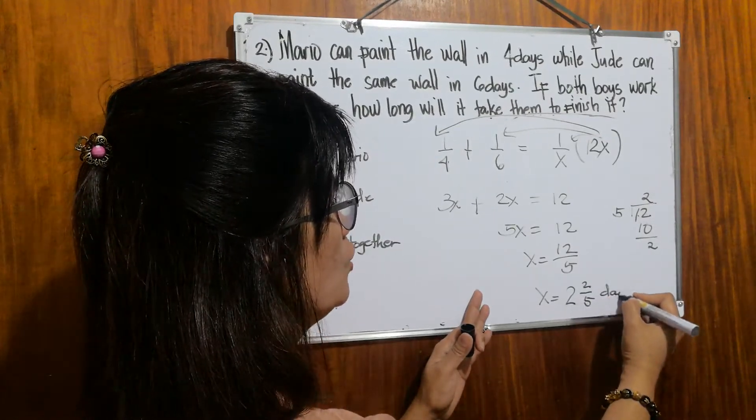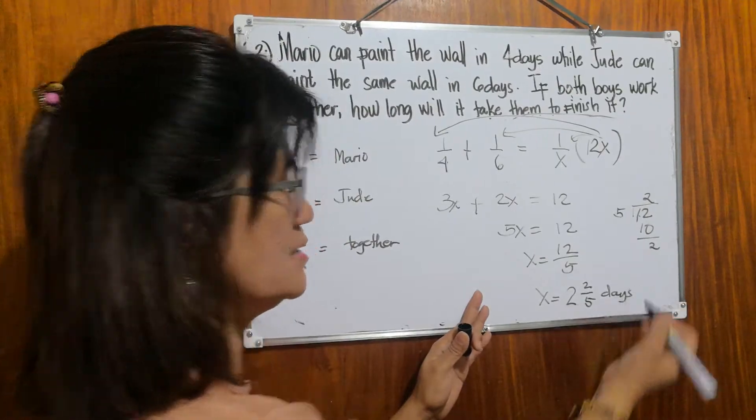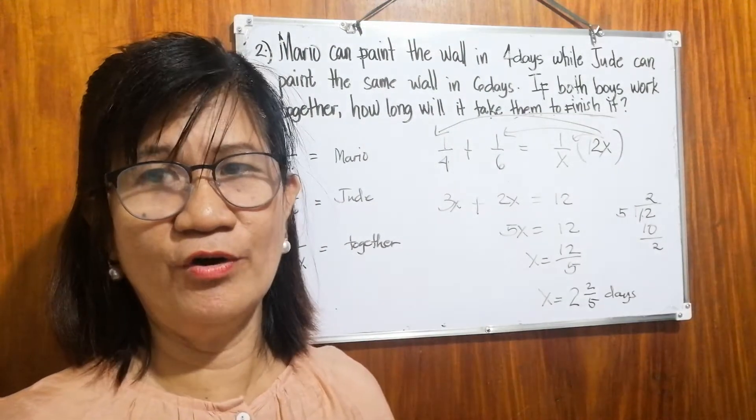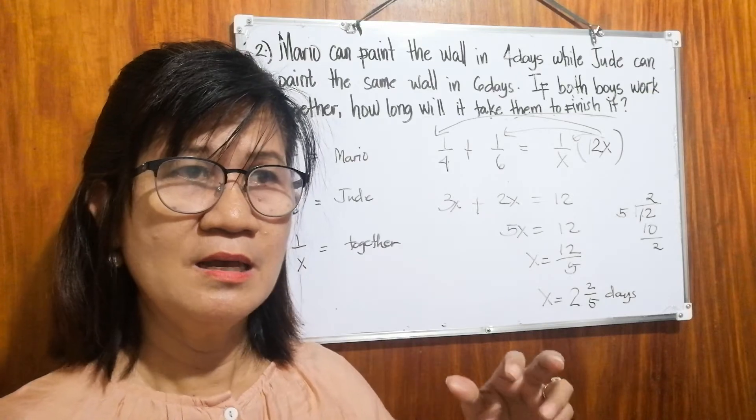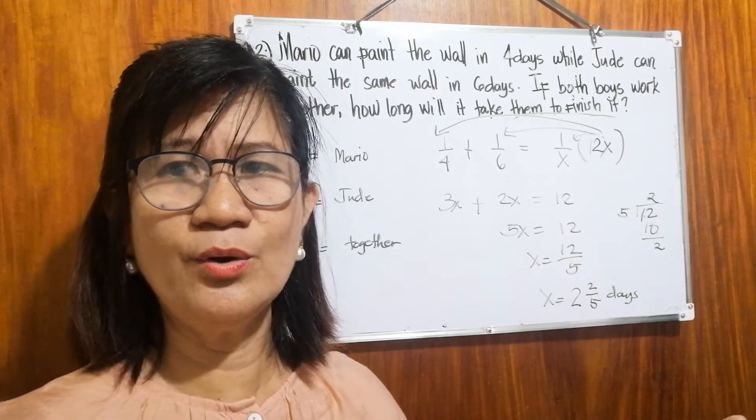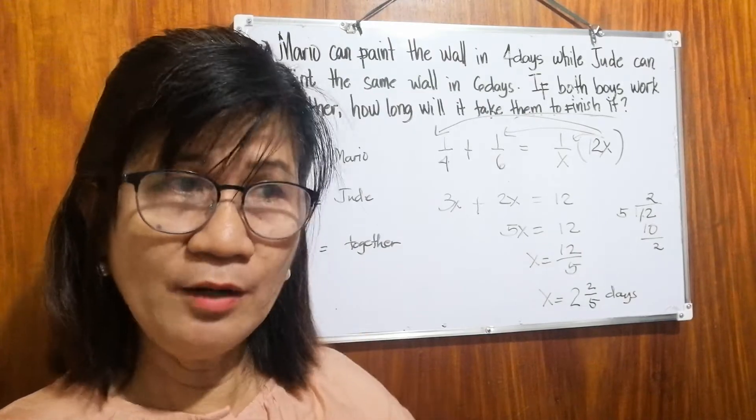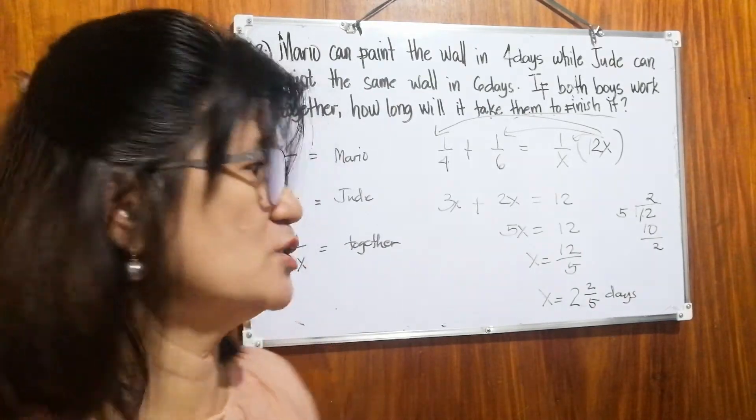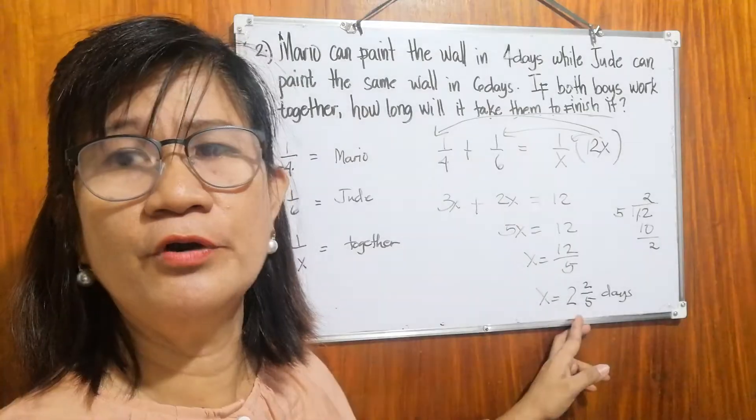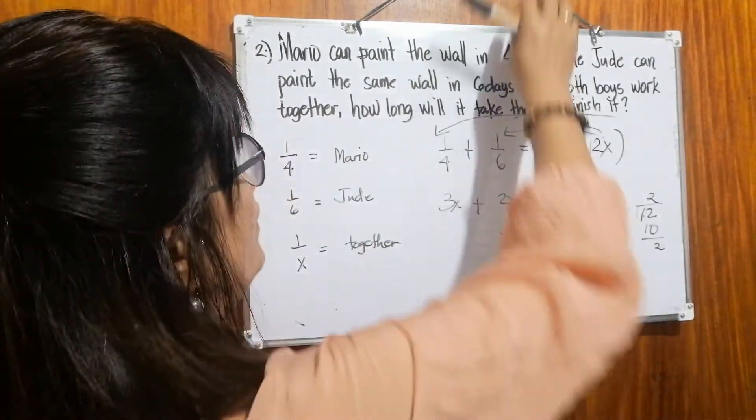Two and two-fifths days. So it's lower than four. Of course, if Mario alone can finish this in four days, what if the two of them work together? So it will last only for two and two-fifths days.